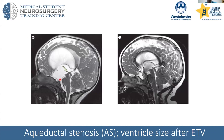Here's an example of a patient who had an ETV for aqueductal stenosis and the ventricles came down afterwards. However, VP shunt is a much more effective way of decreasing ventricle size, whereas with ETV you don't always see such a dramatic decrease. Studies are still ongoing to determine whether that has clinical significance.